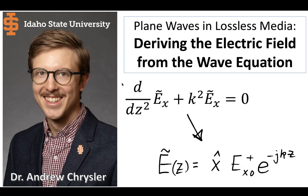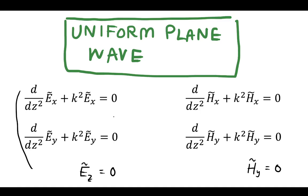Now let's finish deriving the electric field from the wave equation. We're going to go from this differential equation to the solution. In the previous video, we arrived at six equations. We're going to mainly focus on the electric field ones. We had two differential equations and one expression, and these relate to the x, y, and z directions of the electric field. In order to solve these and get the total electric field in our uniform plane wave, we're going to need to solve these differential equations.